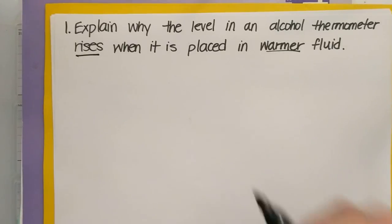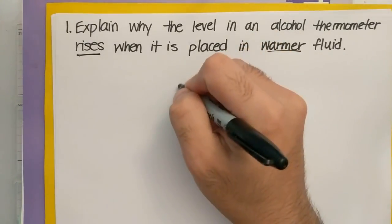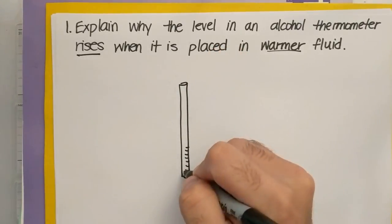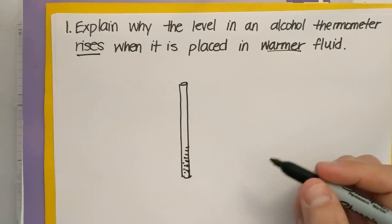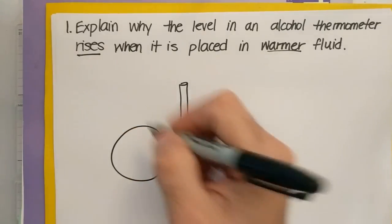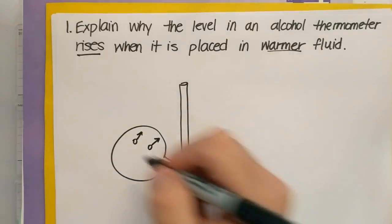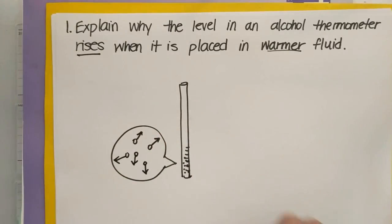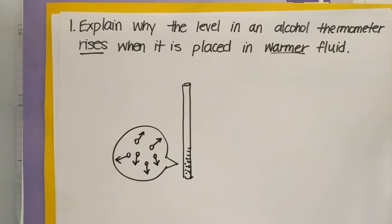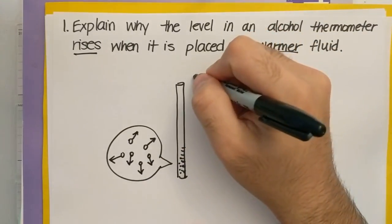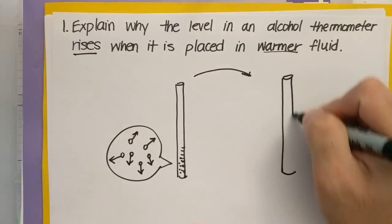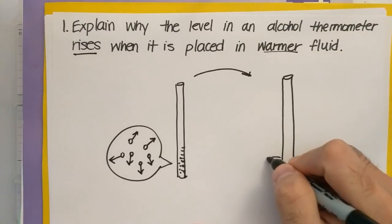There's a three-step process and we're going to go through that. I'm going to draw my thermometer — just as a tube with markings and particles inside. If I zoom in, my particles are moving at whatever temperature is in the air. Let's just call it room temperature, so they're moving at room temperature speed. Then if I place that thermometer into a bowl of warm fluid...